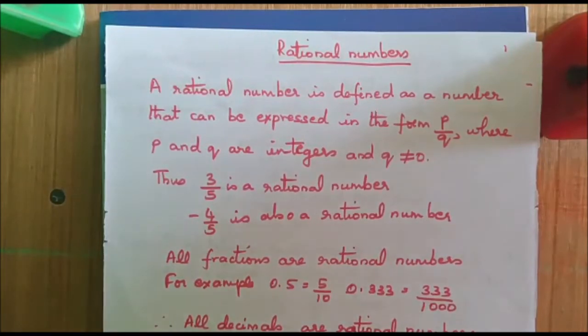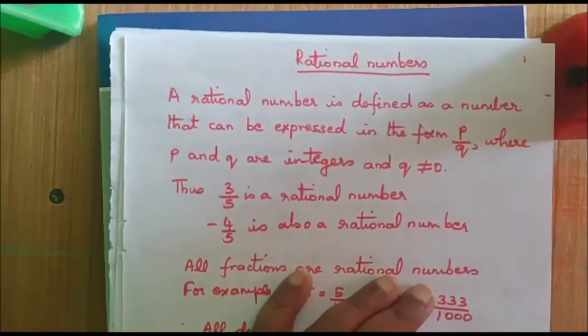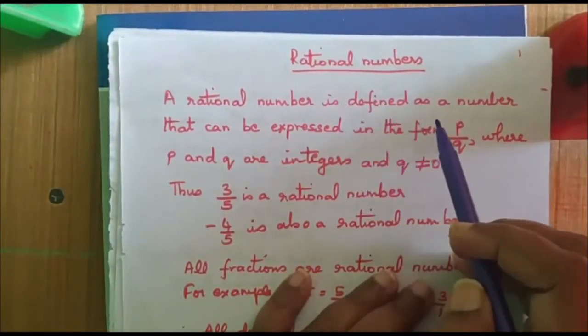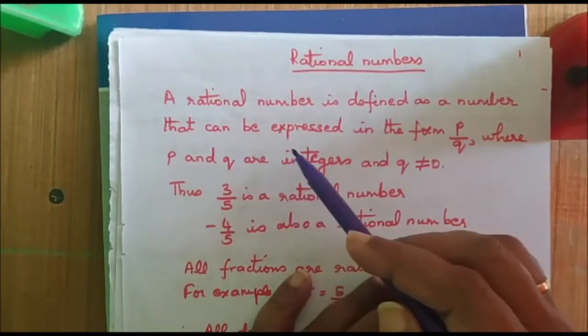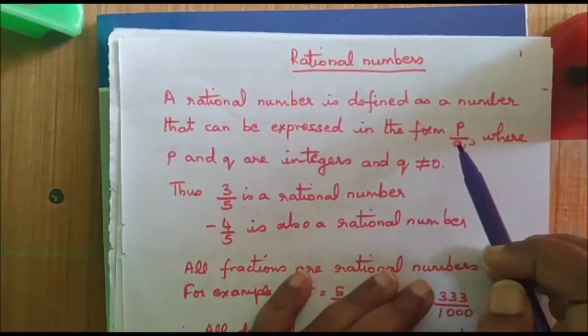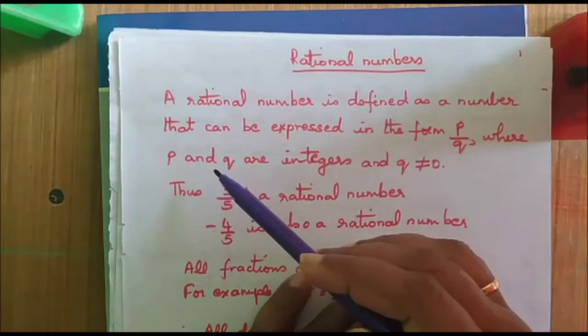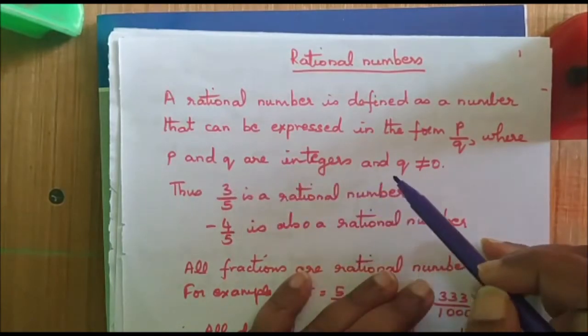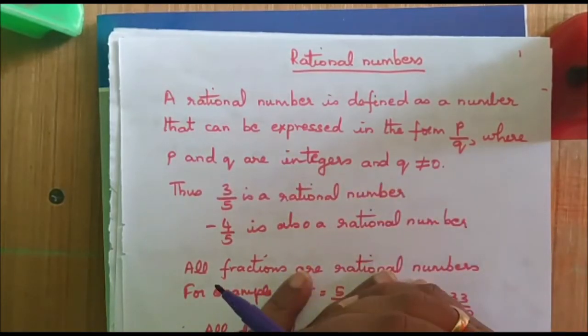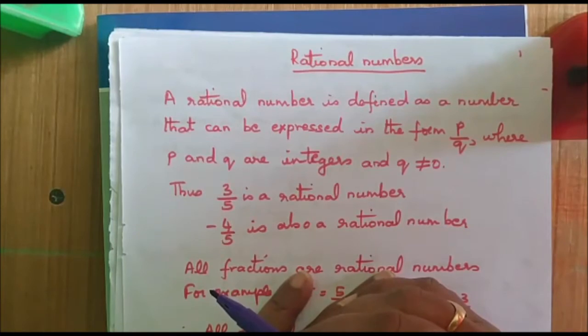What do you mean by a rational number? A rational number is defined as a number that can be expressed in the form p by q where p and q are integers and q is not equal to 0. So, that is the definition for rational numbers.